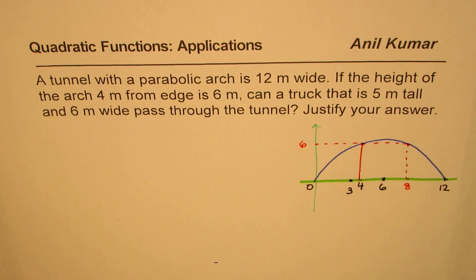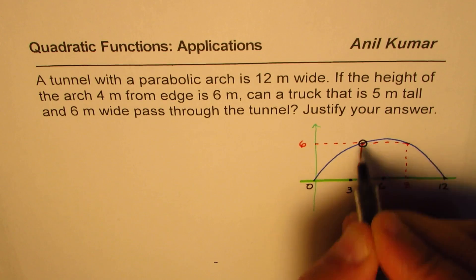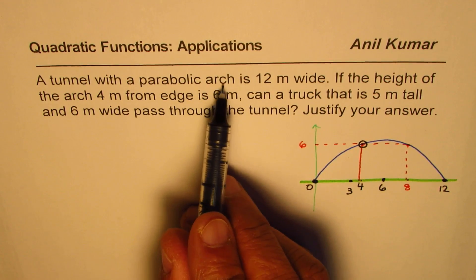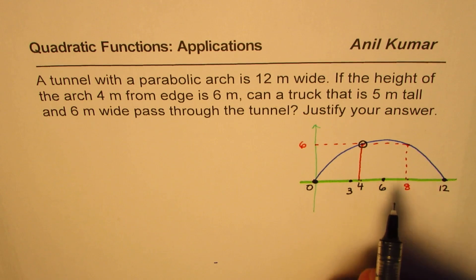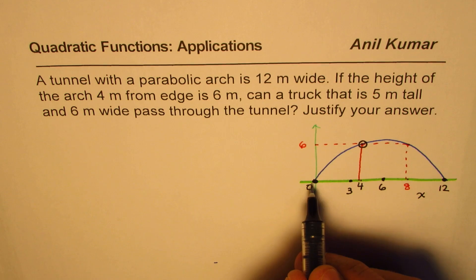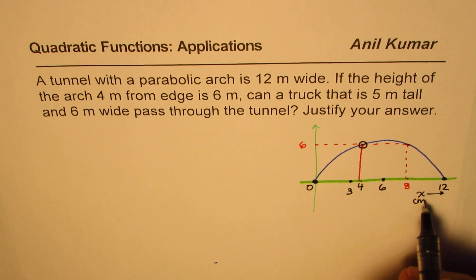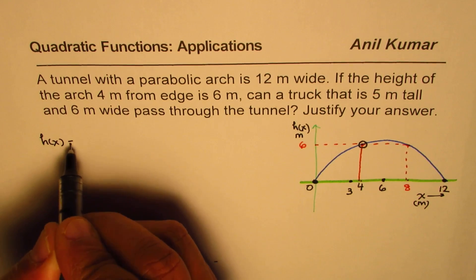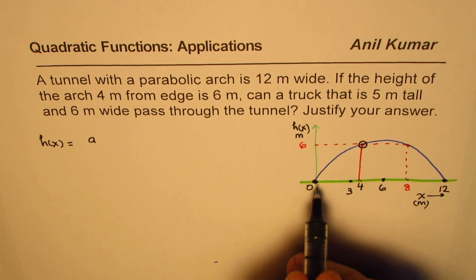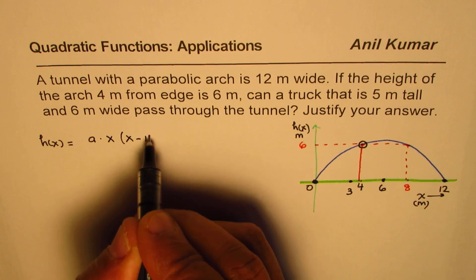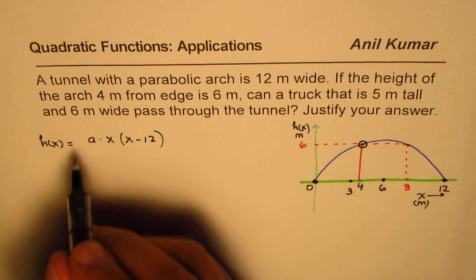Let's write down this quadratic equation. Let me first define the variables. Let's say the distance from one edge of the arc be x in meters, and the height be h(x) in meters. In that case, h(x) equals a times x minus 0, so I could write x here, times x minus 12. So that becomes the quadratic equation.